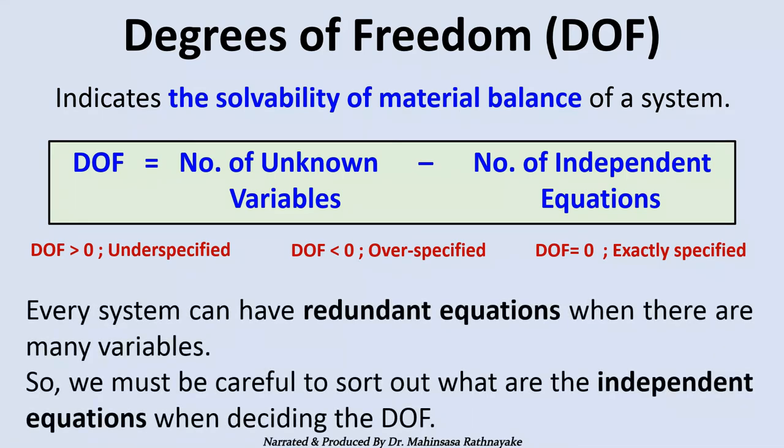Every system can have redundant equations when there are many variables. So we must be careful to sort out what are the actual independent equations when deciding the degrees of freedom.